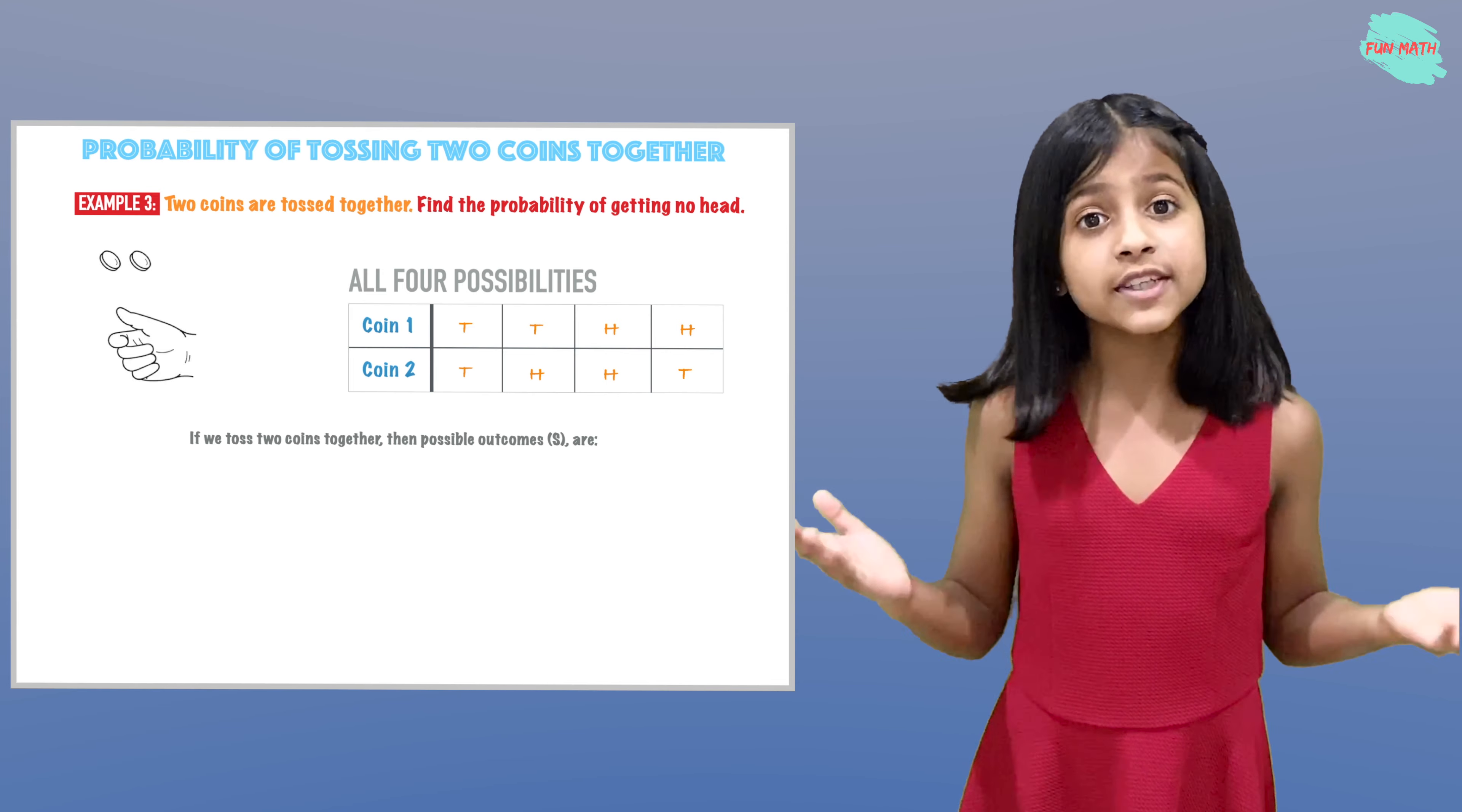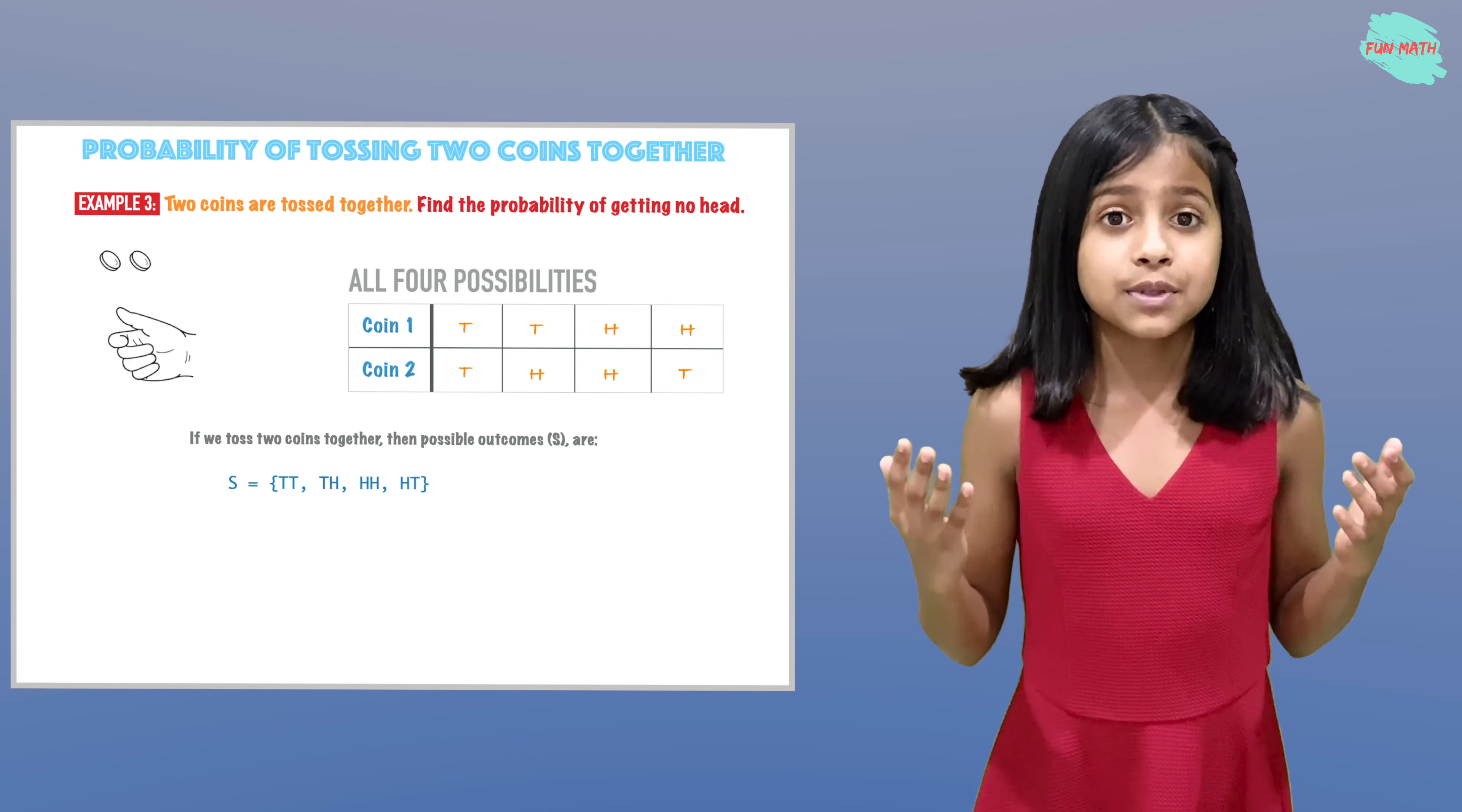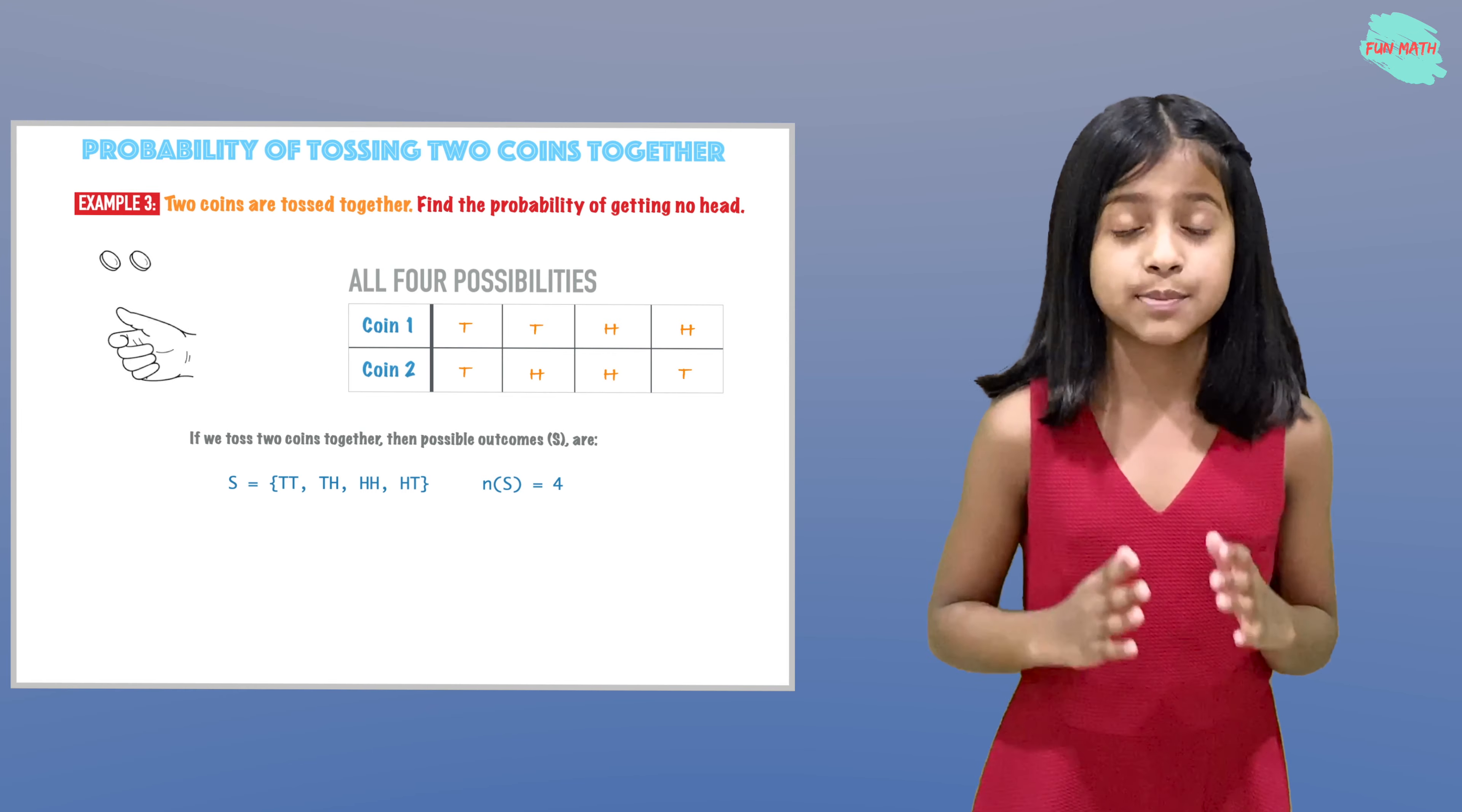If we toss two coins together, the possible outcomes are our sample space. Our sample space is the four possibilities: tails tails, tails heads, heads heads, and heads and tails. We have four possibilities in our sample space.